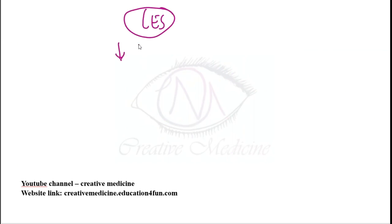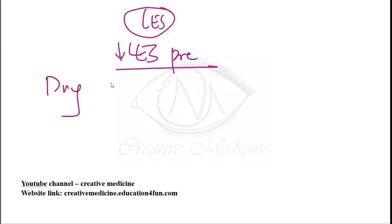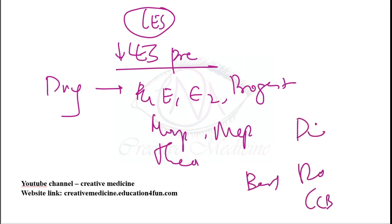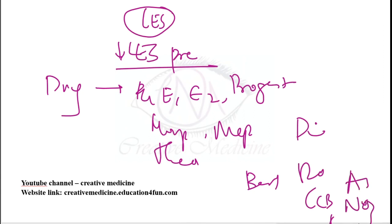Drugs which decrease lower esophageal sphincter pressure include: prostaglandin E1 and E2, progesterone, morphine, meperidine, theophylline, barbiturates, diazepam, dopamine, calcium channel blockers, atropine, and nitrates.